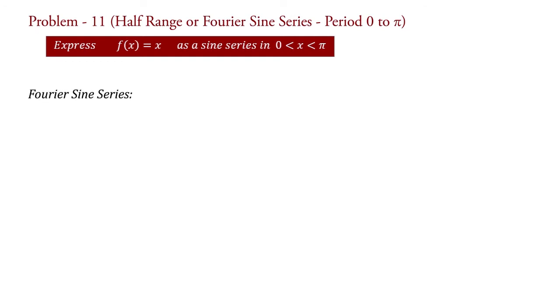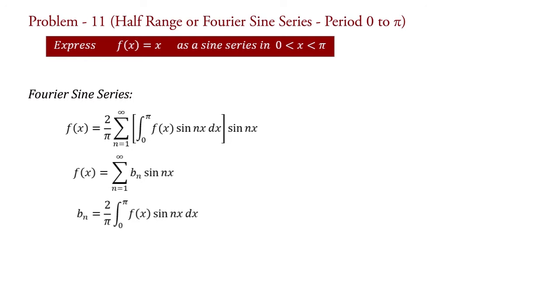The Fourier sine series is f of x equal to this one. In decomposed form, it is written as f of x equal to summation n equal to 1 to infinity into bn sin nx, where bn equal to 2 upon π integral 0 to π f of x sin nx dx. We will take this second form of the equation.